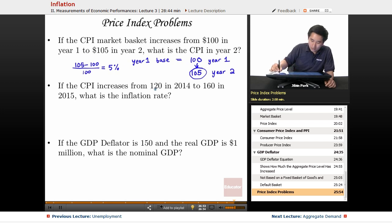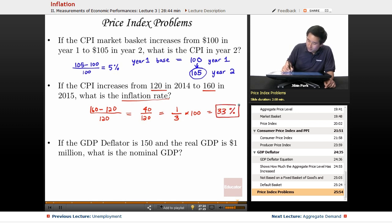If the CPI increases from 120 in 2014 to 160, what is the inflation rate? Again, you take the index in year two, 160, minus what was in year one, 120, all over 120. Then you get 40 over 120 equals 1 over 3 times 100, and you get an inflation rate that's pretty high, 33%.